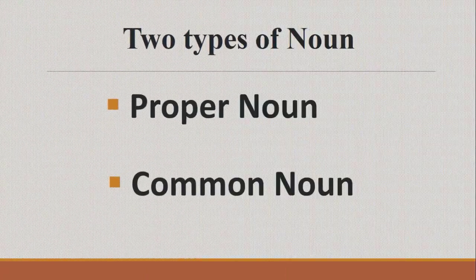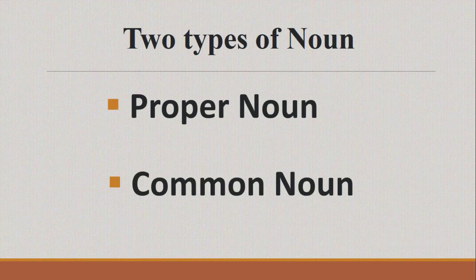You might have kept pet animals at home, like cats or dogs. When we talk about 'a cat' or 'a dog,' it is a common noun because there are so many cats and dogs. But when you have given your pet a special name — for example, Tommy or Rish or any other name — then it becomes a proper noun and is written with a capital letter.